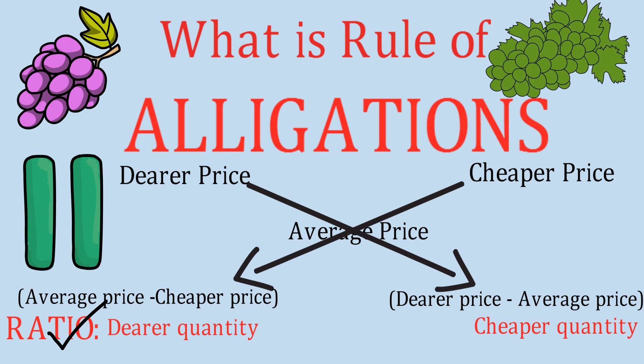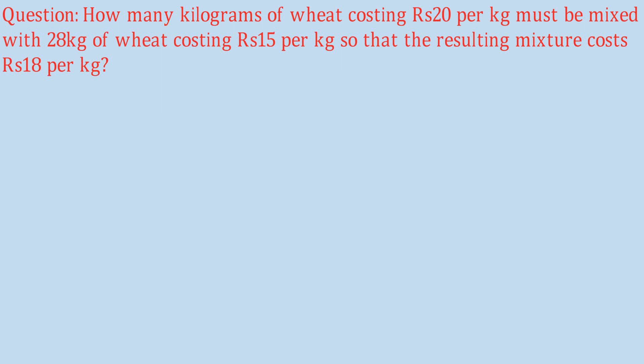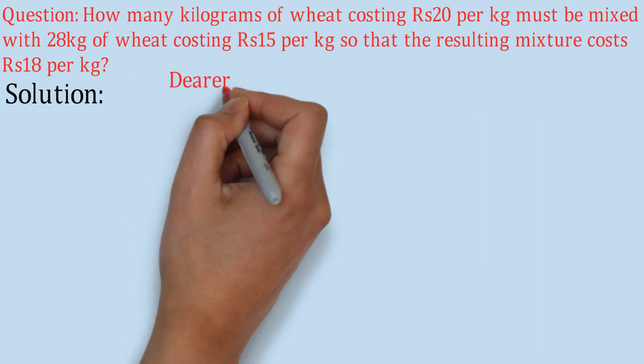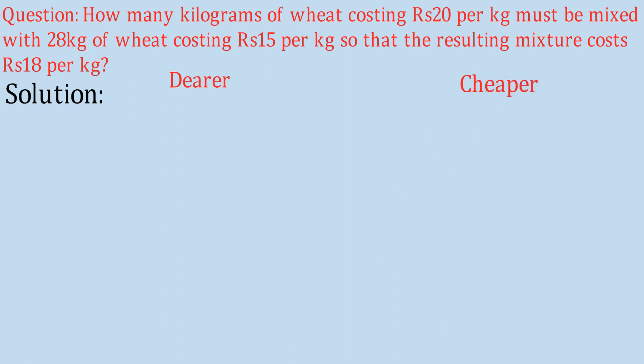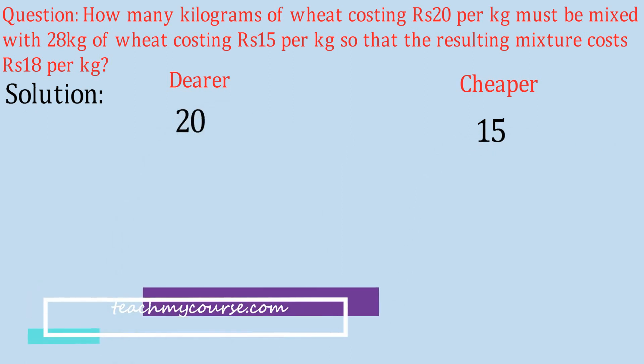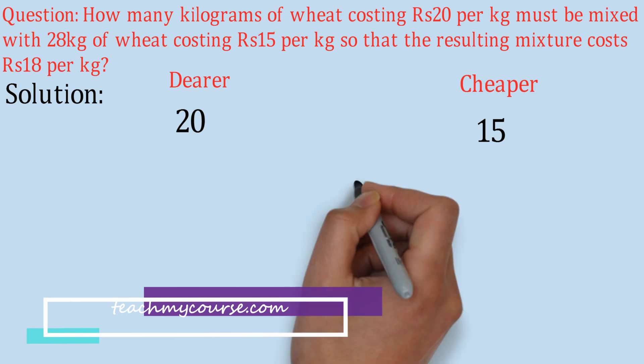Let us further understand it with the help of a question. How many kilograms of wheat costing rupees 20 per kg must be mixed with 28 kg of wheat costing rupees 15 per kg so that the resulting mixture costs rupees 18 per kg? We have two varieties of wheat — cheaper at Rs 15 per kg, dearer at Rs 20 per kg, and the average mixture cost is Rs 18 per kg.